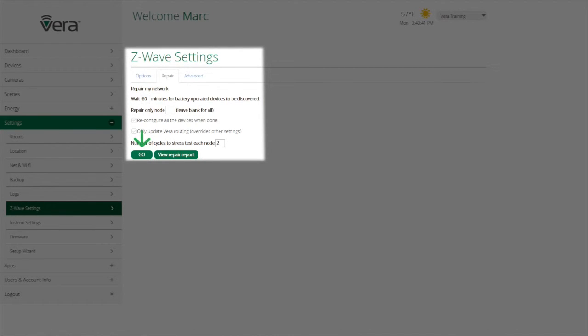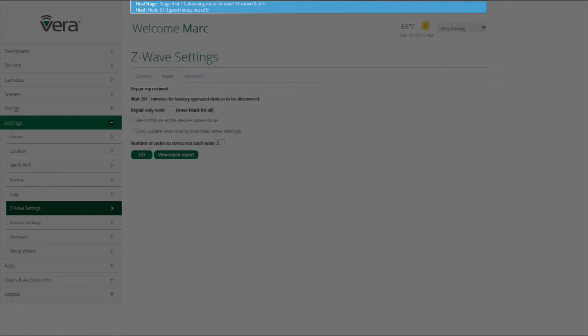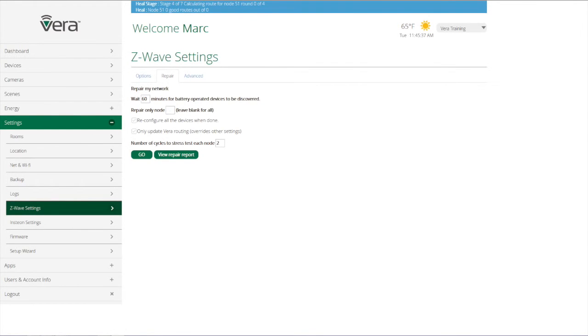So we're going to click on Go, and a status box will be in the top of the screen in light blue telling you what is going on. And when it is done, it will tell you that your network has been repaired or healed.